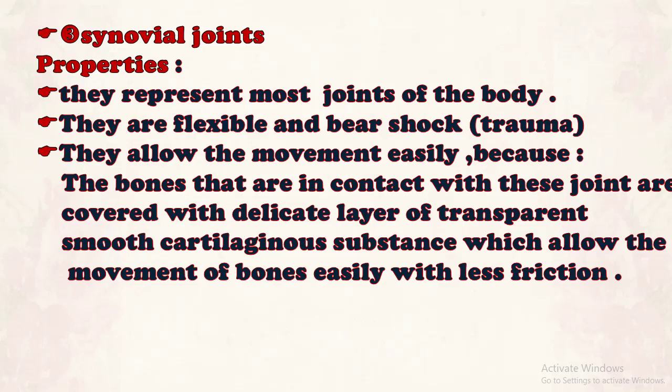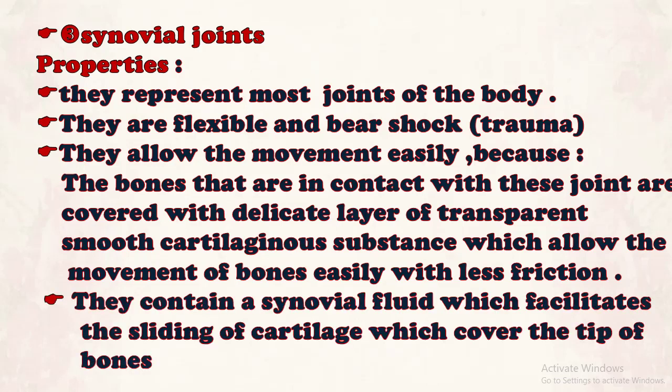Why does the synovial joint allow movement easily? Number one: it is covered with a delicate layer. Number two: the cartilaginous substance is smooth. Number three: the smooth surface allows movement with less friction. Number four: they contain synovial fluid, which facilitates the sliding of the cartilaginous surfaces that cover the tips of bones — like the protein substance in an egg. This fluid is thick and facilitates the sliding of the bones.